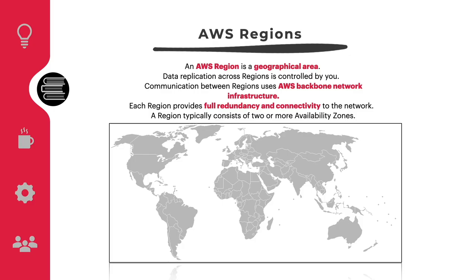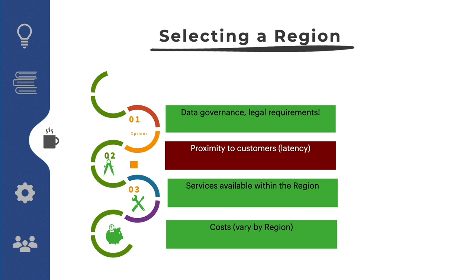The global infrastructure is designed and built to deliver a flexible, reliable, scalable, and secure cloud computing environment with high-quality global network performance. The AWS global infrastructure is built around regions. AWS has 22 regions worldwide. An AWS region is a physical geographical location with one or more availability zones. Availability zones consist of one or more data centers to achieve fault tolerance and stability. A region is isolated from others — resources in one region are not automatically replicated to other regions. It is your responsibility to replicate data across regions if your business requires it.